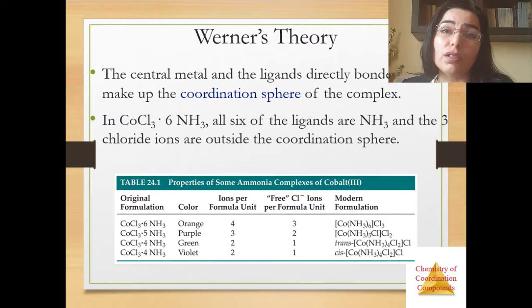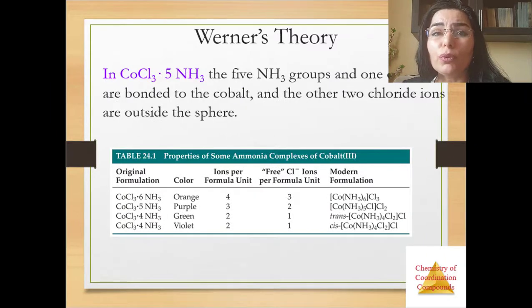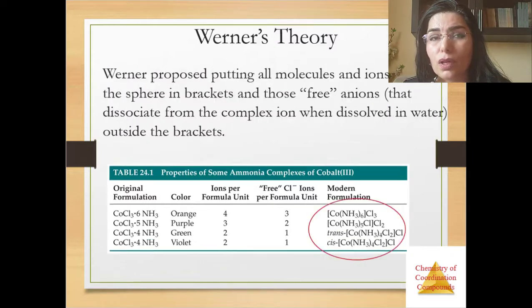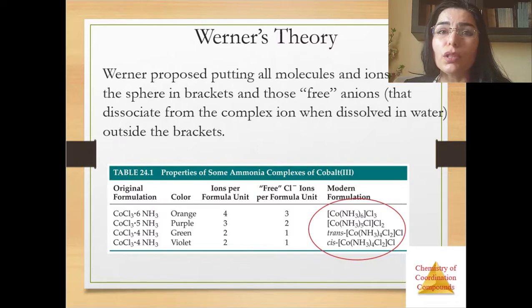The central metal and the ligands directly bonded to it make up the coordination sphere of the complex. In cobalt chloride with six molecule ammonia, all six of the ligands and the cobalt chloride and the three chloride ions are outside the coordination sphere. In cobalt chloride with five molecule ammonia, the five ammonia groups and one chlorine are bonded to the cobalt and the other two chloride ions are outside the sphere. Werner proposed putting all molecules and ions within the sphere in brackets and those ions that dissociate from the complex ion when dissolved in water outside brackets.